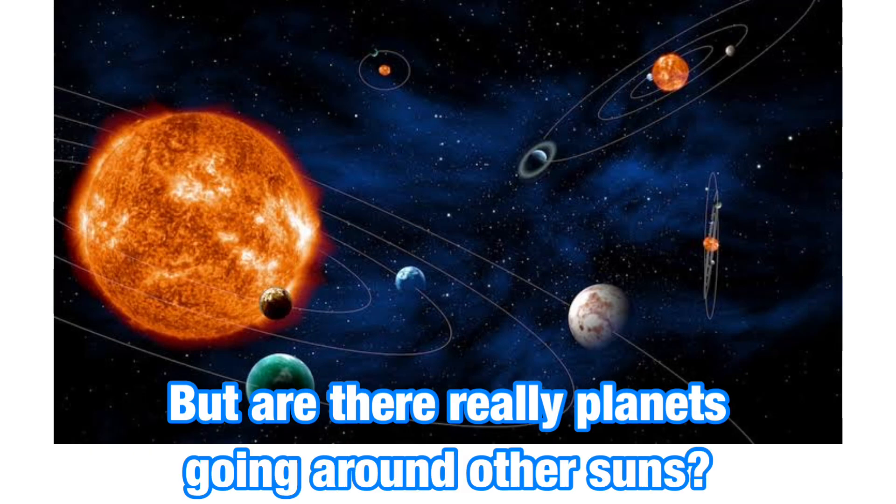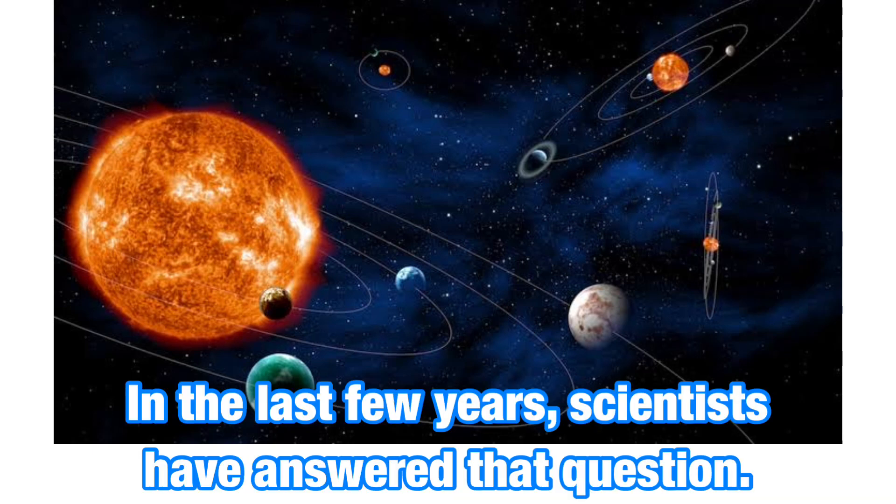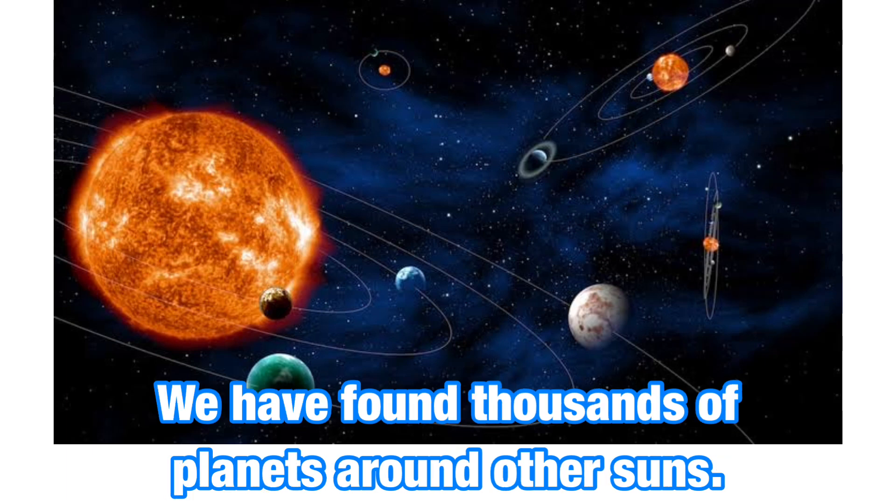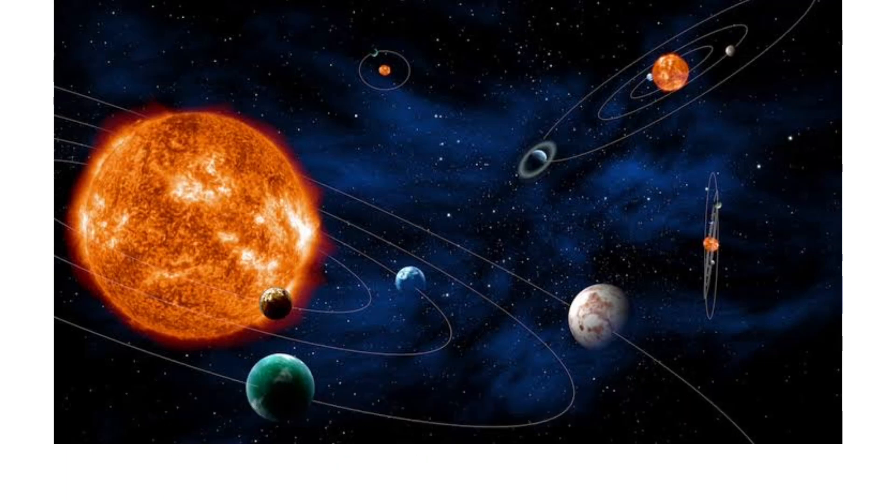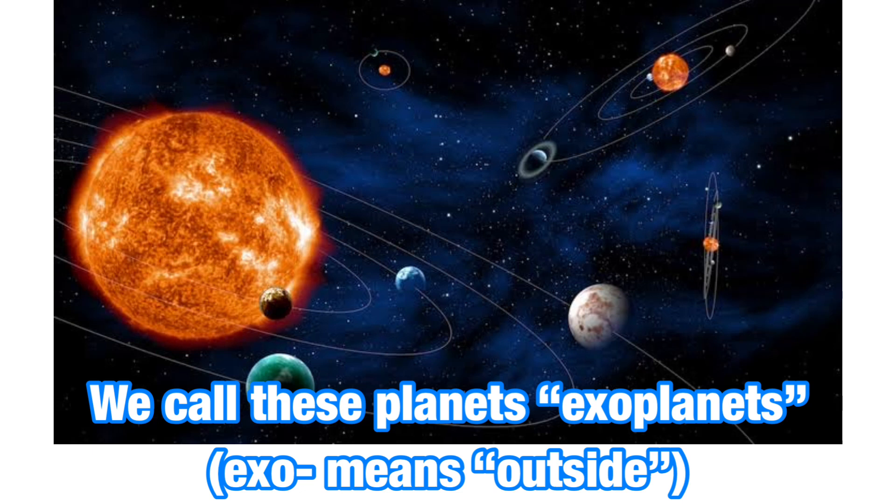But are there really planets going around other suns? In the last few years, scientists have answered that question. We have found thousands of planets around other suns. We call these planets exoplanets.